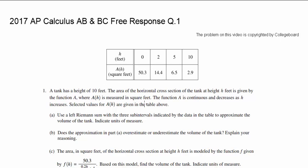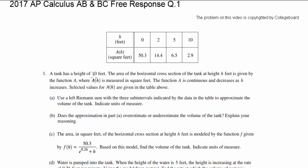Let's look at question number one from 2017 AP Calculus AB or BC Free Response. A tank has a height of 10 feet. The area of a horizontal cross section of a tank at height h is given by the function h.